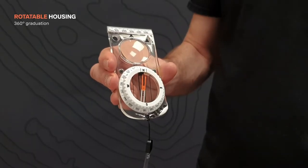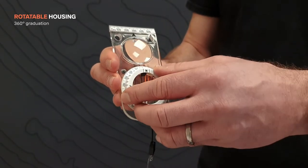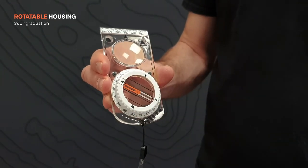The rotatable housing has a grip friendly surface with 360 degree graduation and also the cardinal points marked on it.